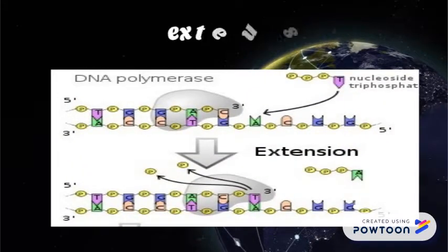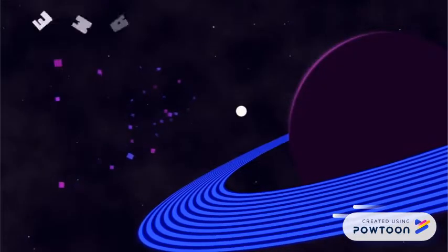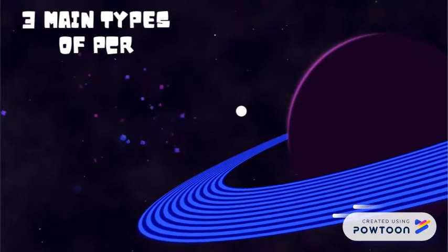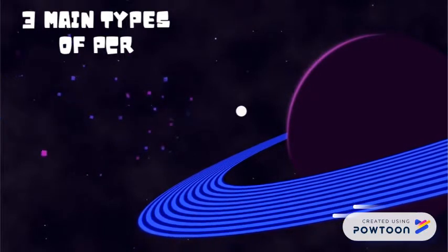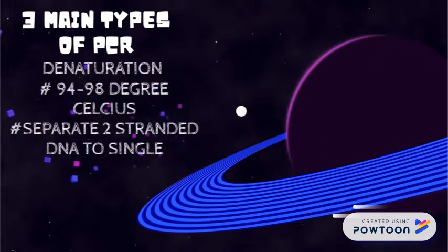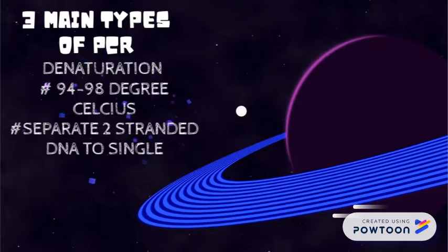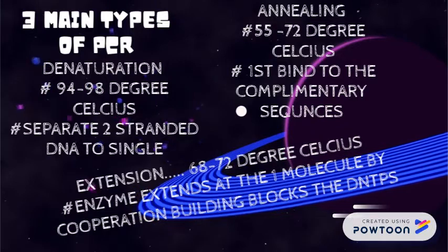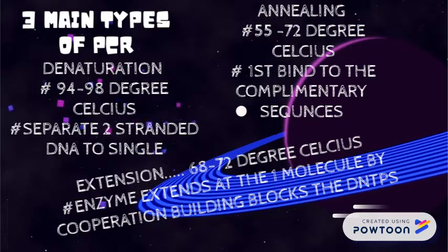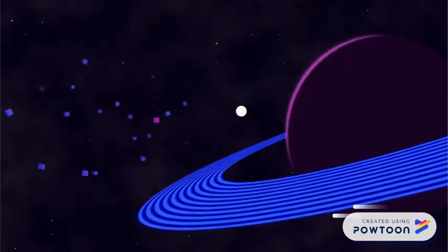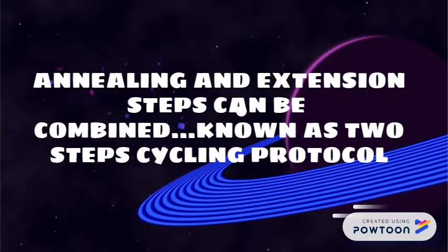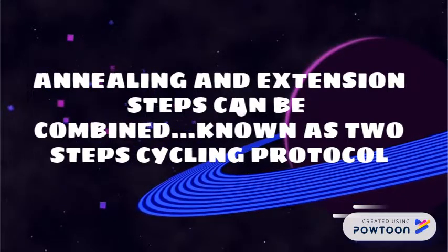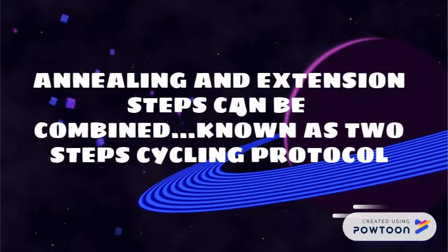The final step is extension at 68 or 72 degrees Celsius, depending on the enzyme's optimal temperature. In this step, the enzyme extends the primer molecules by incorporation of the building blocks, the dNTPs. The polymerase can only start to replicate on the template where a primer has annealed to it, meaning the primer sequence is crucial for amplification of the correct part of the DNA. In some cases, the annealing and extension steps can be combined — this is known as a two-step cycling protocol.